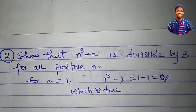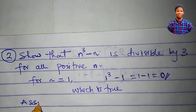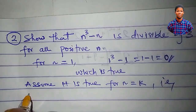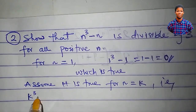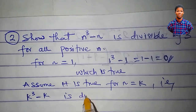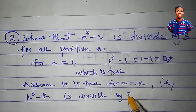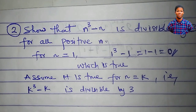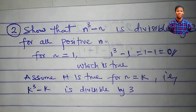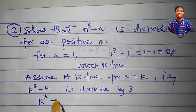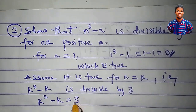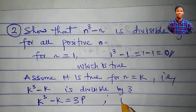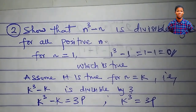Since it is true for n equal to 1, we assume it is true for n equal to k — that is, k cubed minus k is divisible by 3. If k³ minus k is divisible by 3, there exists a positive integer p such that k³ minus k equals 3p. Making k³ the subject: k³ equals 3p plus k.